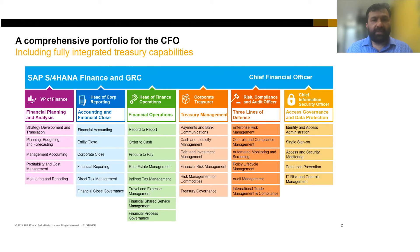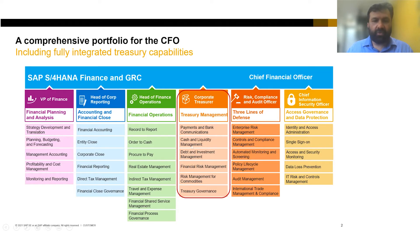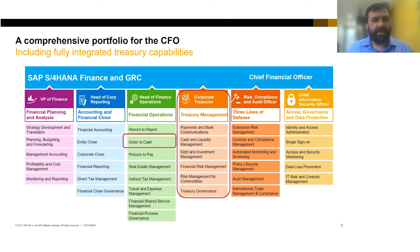As far as the Office of CFO Solution Portfolio is concerned, what you see on the screen is a whole gamut of solutions relevant for the Chief Financial Officer. I'll be covering two topics: first, treasury, which encompasses payments and bank communication, cash and liquidity, debt and investment management, financial risk, commodity, and treasury governance. The other topic will be order to cash, mainly the receivables process and the enhancements SAP has developed as part of innovations in this area.